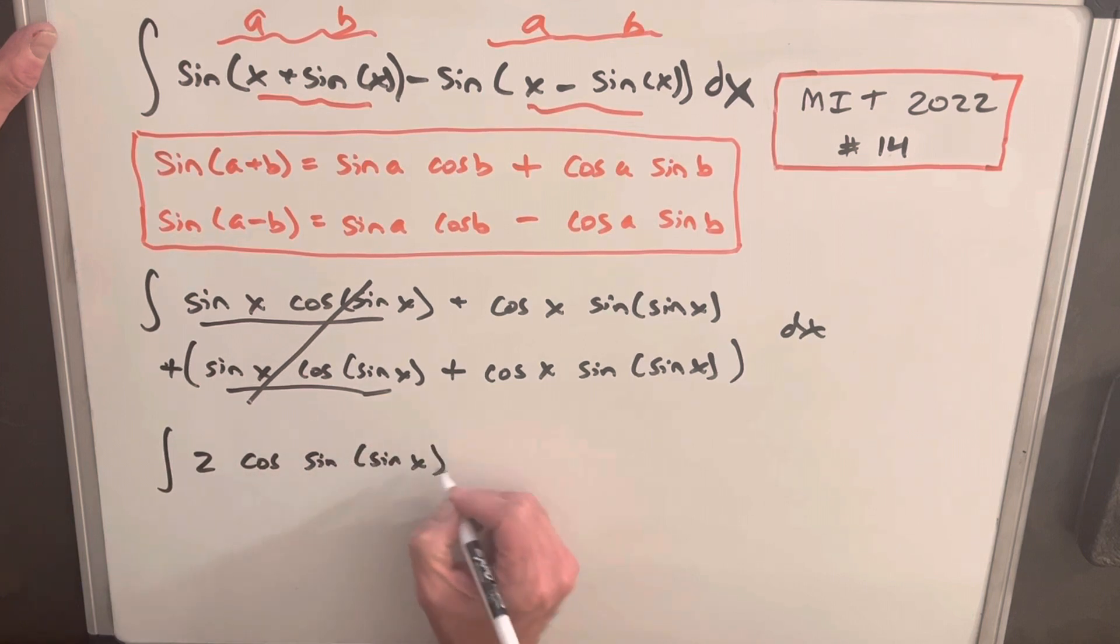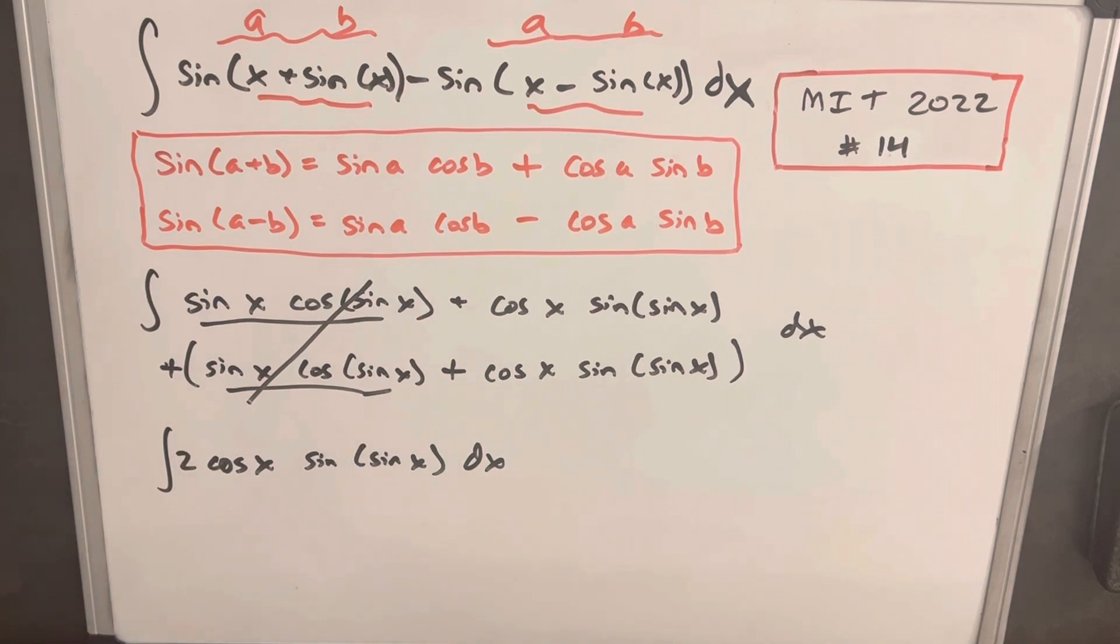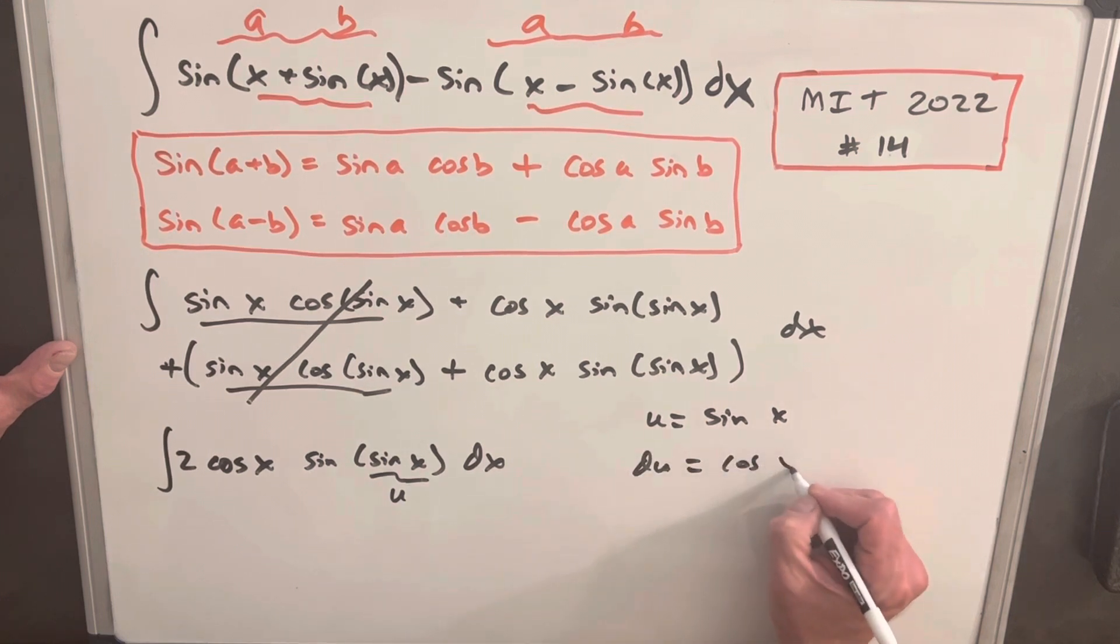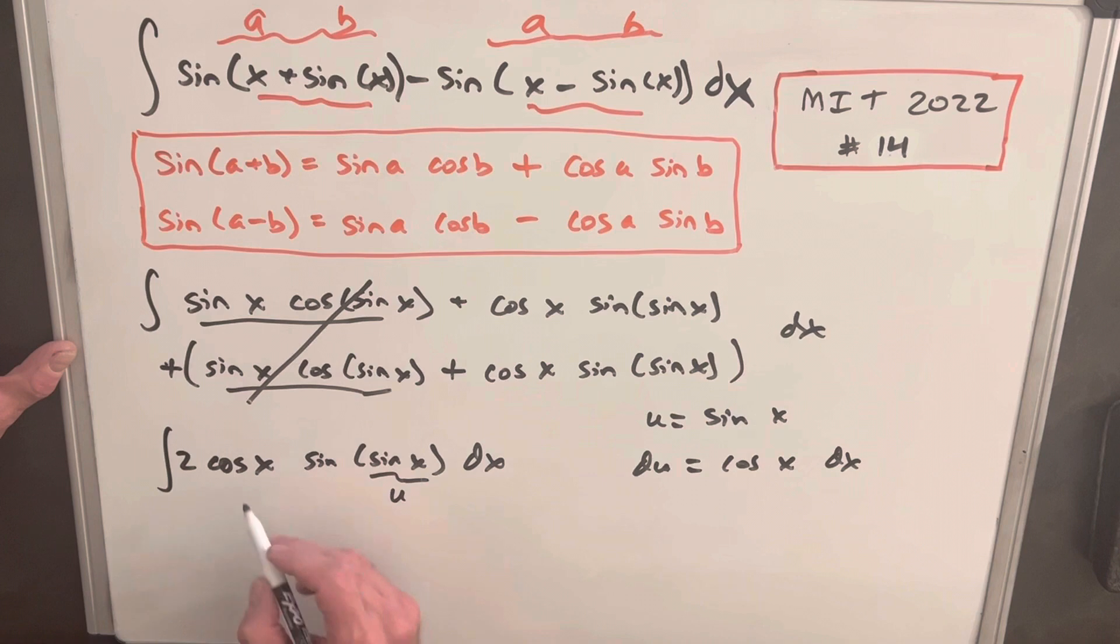But now we've actually simplified this enough that we can use a u-substitution. This piece is still kind of complicated, but if I make this my u, this should work out nice. So we'll call u = sin x, du is going to be cos x dx. We have our cos here with our dx, so that's going to be our du.